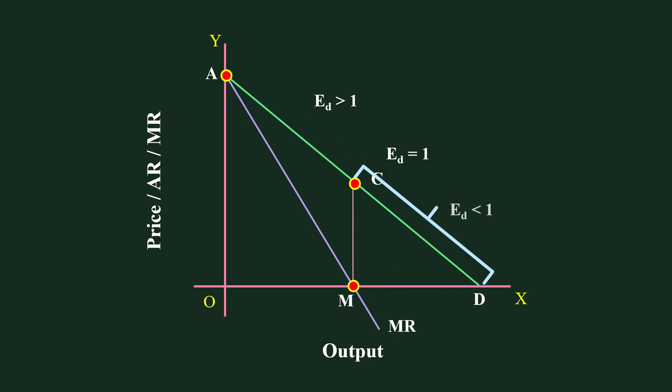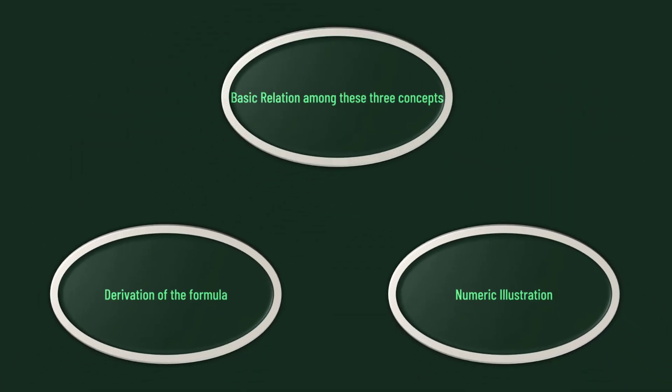Third: To the right of point C — that is in the segment CD — Elasticity of Demand is less than 1. Looking at the Marginal Revenue Curve corresponding to this segment, Marginal Revenue is negative. So it must be understood that so long as Marginal Revenue is negative, Demand is relatively inelastic. Part 2 starts.